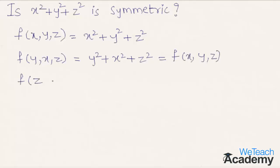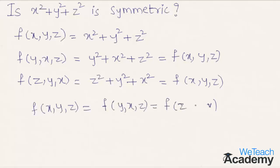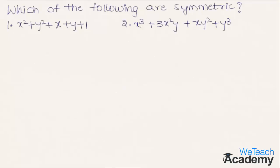We get f as z squared plus y squared plus x squared, and this expression is also equal to f. Since the expression satisfies the condition, we say that the expression is symmetric in all three variables x, y and z. Now let us proceed and solve another example.